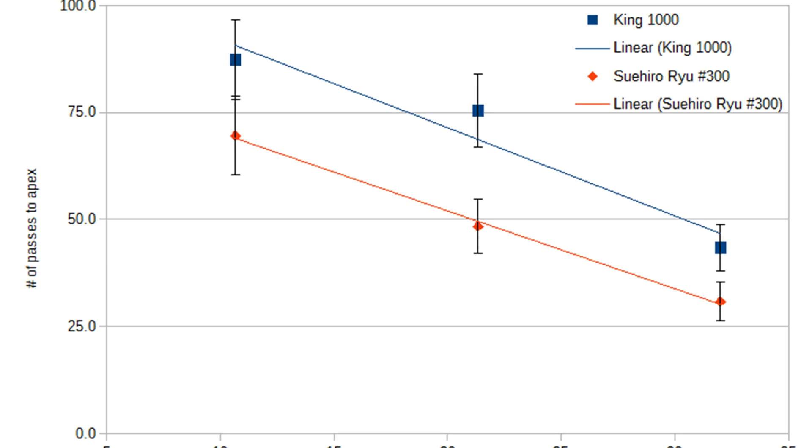This is a graph showing the cutting speed of two stones: a King 1000 and a Suihiro Ryu 300 grit stone, under three different pressures: 10, 20, and 30 psi.